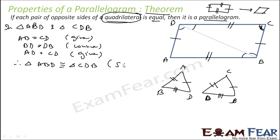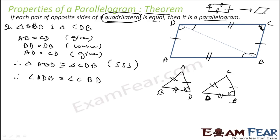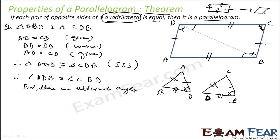Triangle ABD is congruent to triangle CDB by Side-Side-Side. Since the triangles are congruent, angle ADB equals angle CBD. These are alternate angles with BD as transversal, therefore AD is parallel to BC.